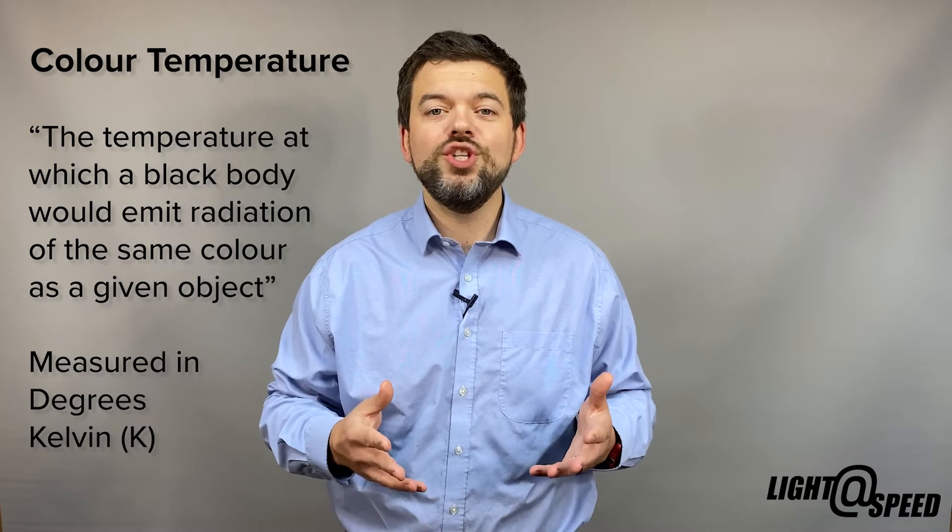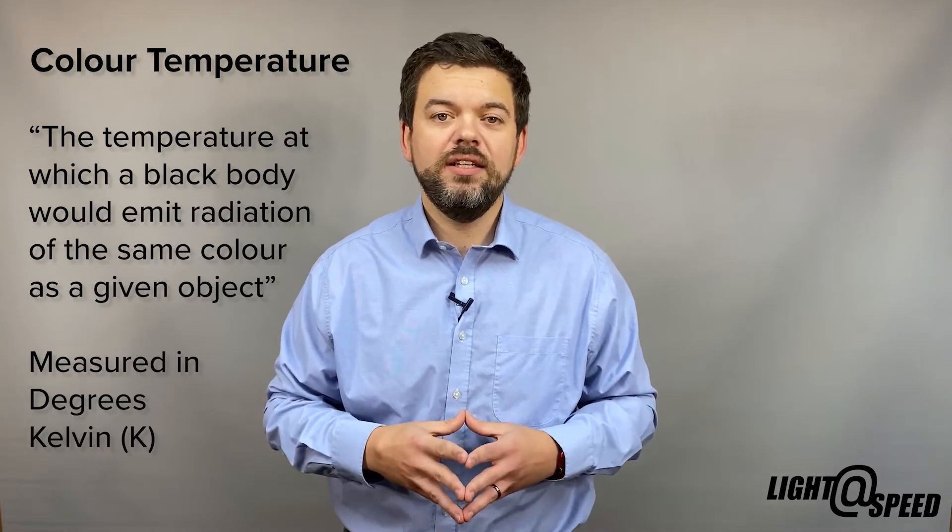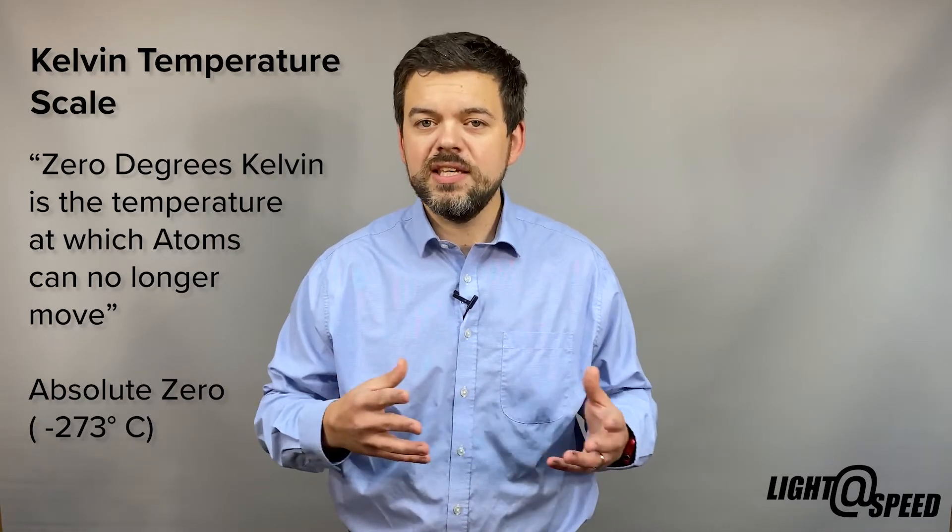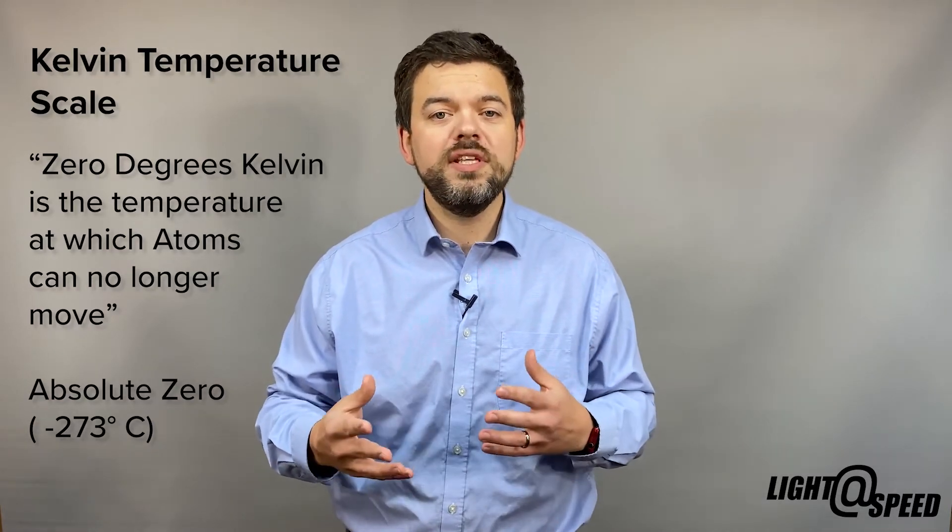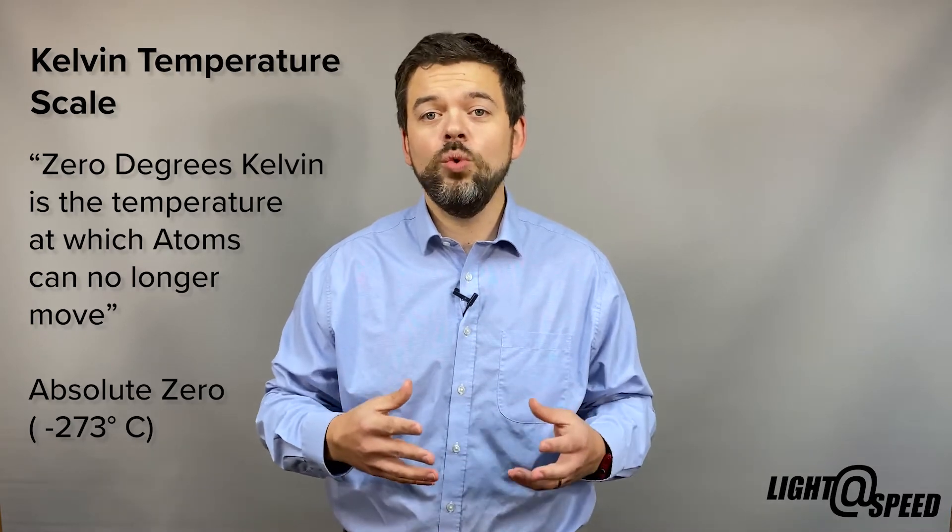Colour temperature is measured in degrees Kelvin. The Kelvin temperature scale is similar to the Celsius scale, except where the Celsius scale is based on the pure water freezing point for zero degrees and the pure water boiling point for 100 degrees. Kelvin takes its zero as the temperature at which atoms themselves can no longer move about. This is also known as absolute zero. Zero degrees Kelvin is minus 273 degrees centigrade.